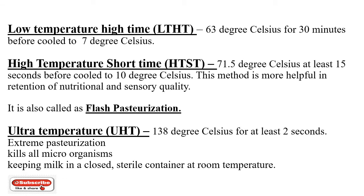What is low temperature long time (LTLT)? Milk is heated to 63 degrees Celsius for 30 minutes before being cooled to 7 degrees Celsius. High temperature short time (HTST) uses 71.5 degrees Celsius for at least 15 seconds before cooling to 10 degrees Celsius. This method is more helpful in the retention of nutritional and sensory quality and is famously called flash pasteurization.